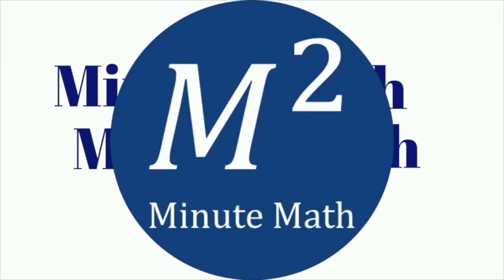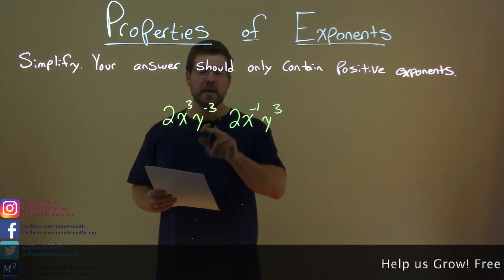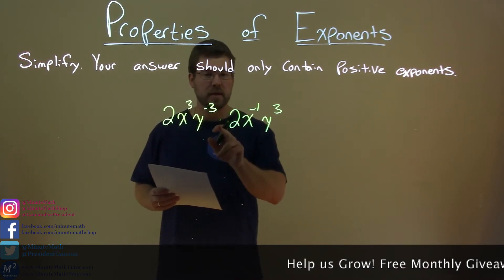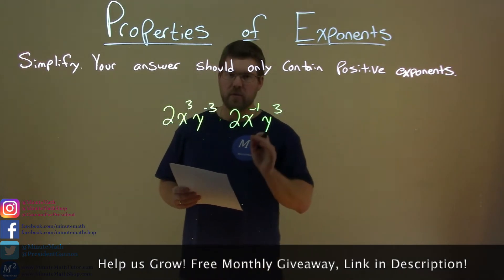We need to simplify 2x to the third power, y to the negative third power, times 2x to the negative one power, y to the positive third power.